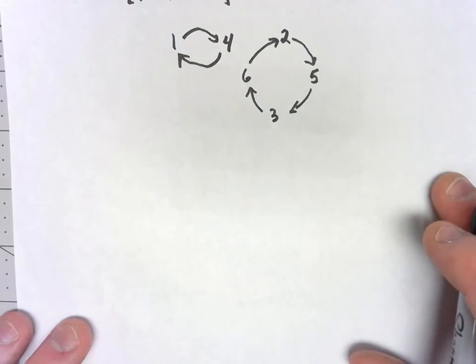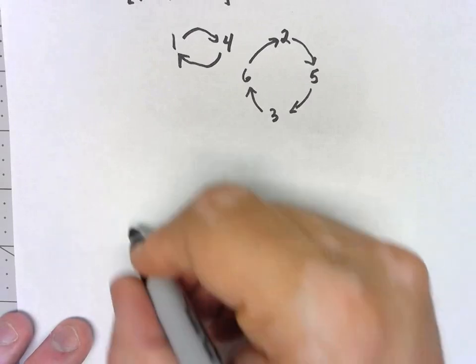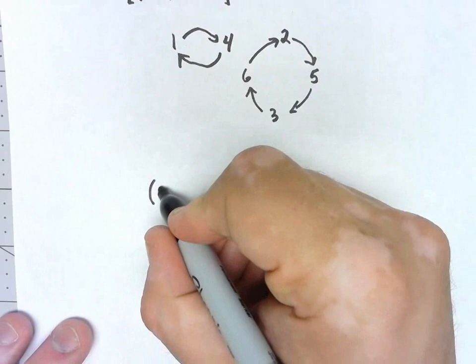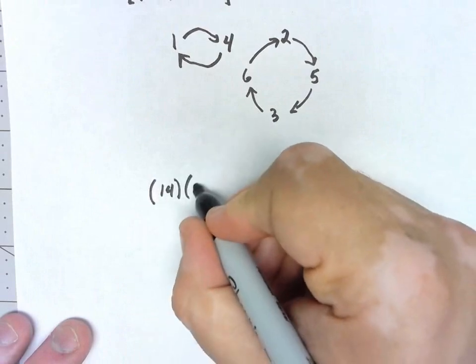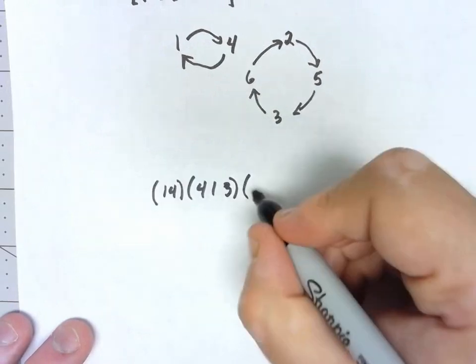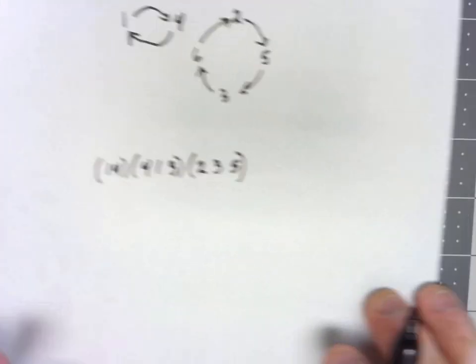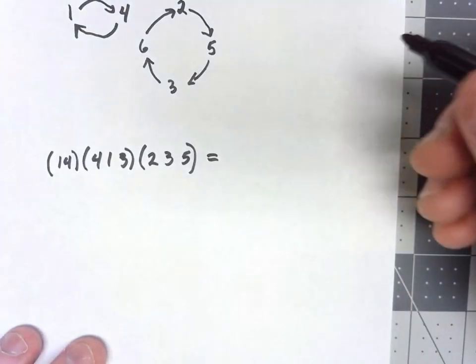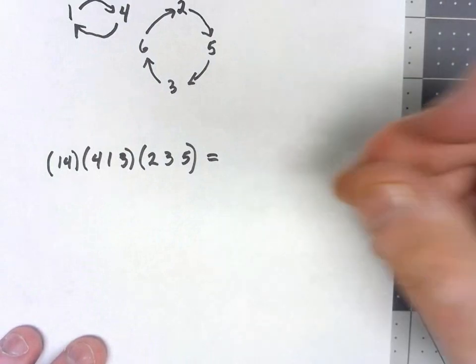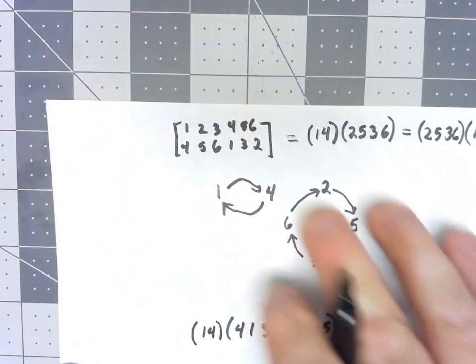Let's think for a second here. How could I multiply things in this cycle notation? So let's say I had something like (1,4) times (4,1,3) times (2,3,5). For the most part, I'm going to do this the same way as what I did with the whole permutation matrix notation.